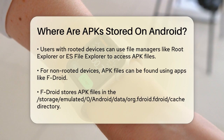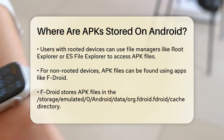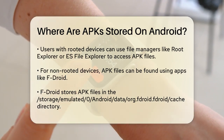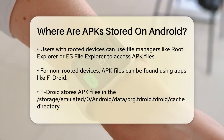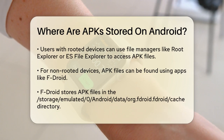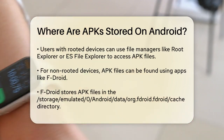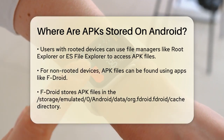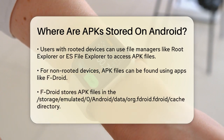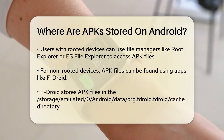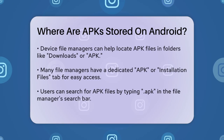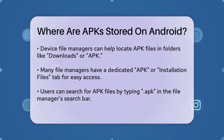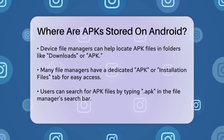For those without root access, there are other ways to find and manage APK files. If you use an app like F-Droid, the APK files are stored in a more accessible location — specifically in the /storage/emulated/0/Android/data/org.fdroid.fdroid/cache directory. This location does not require root permissions to access.